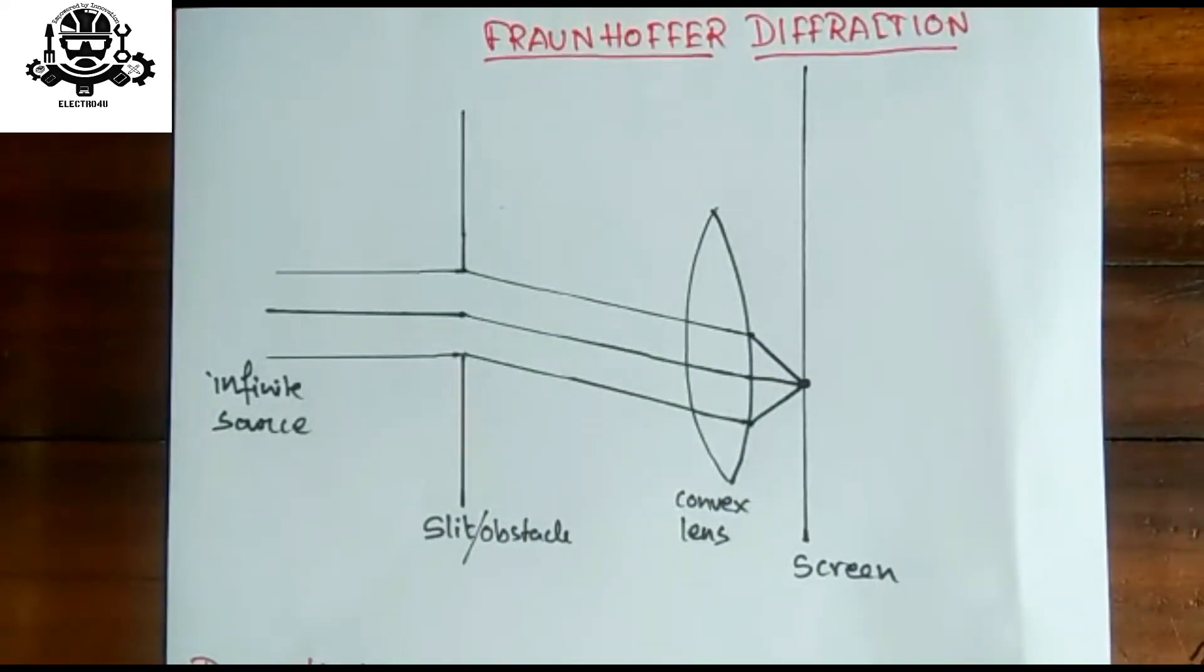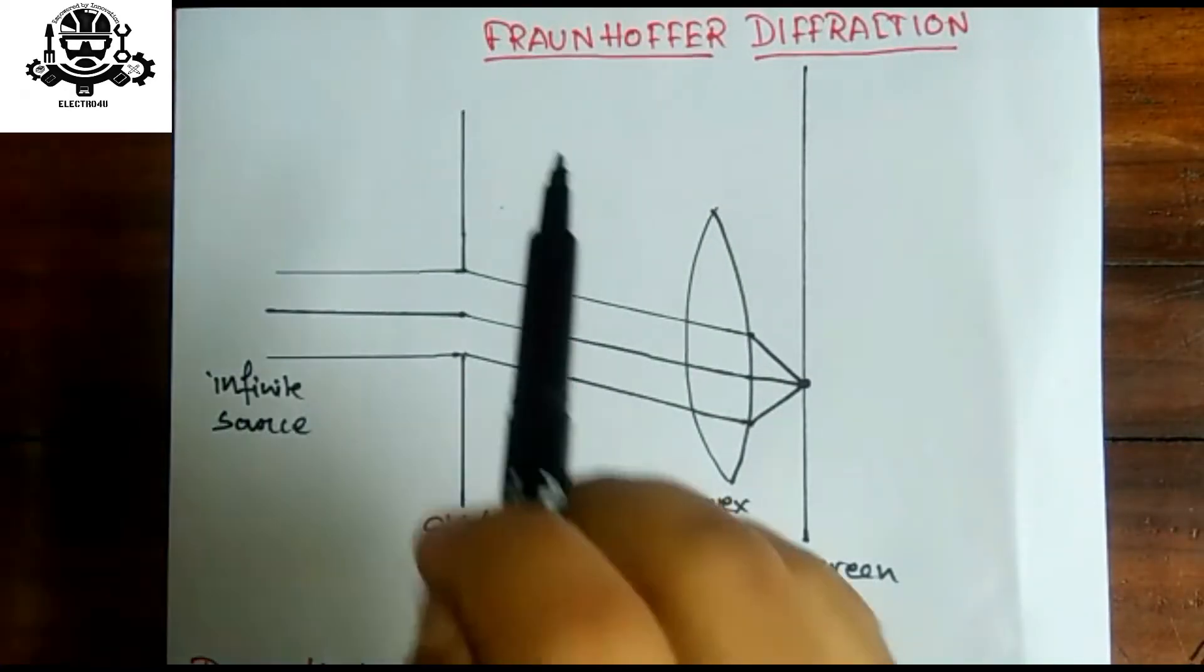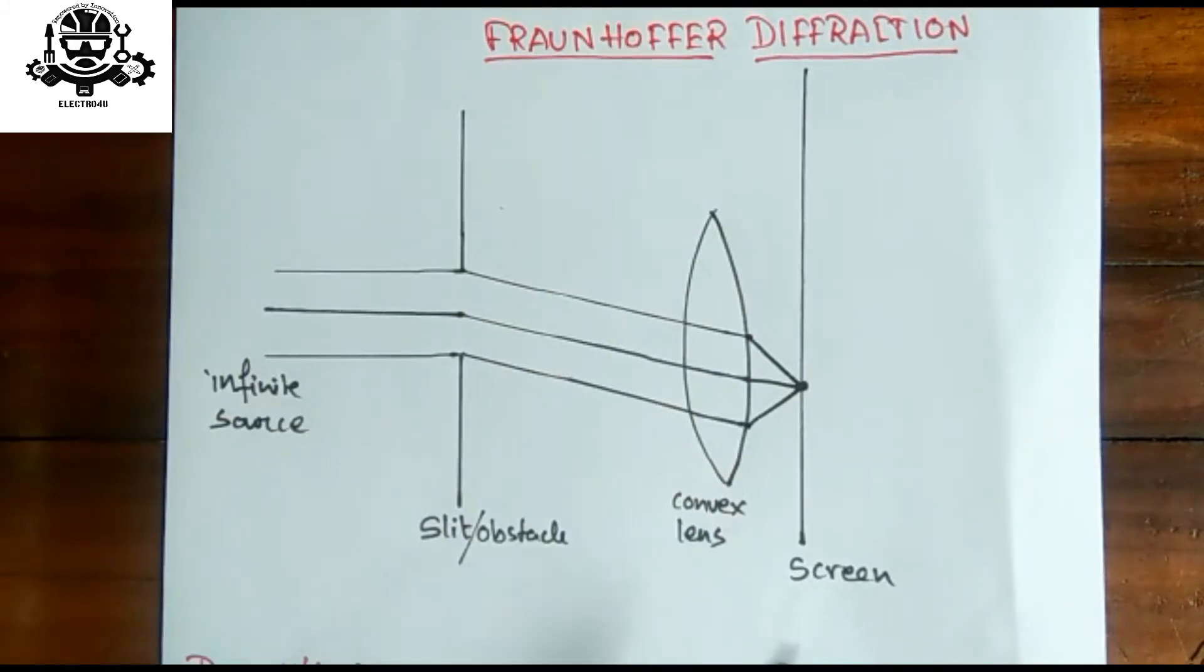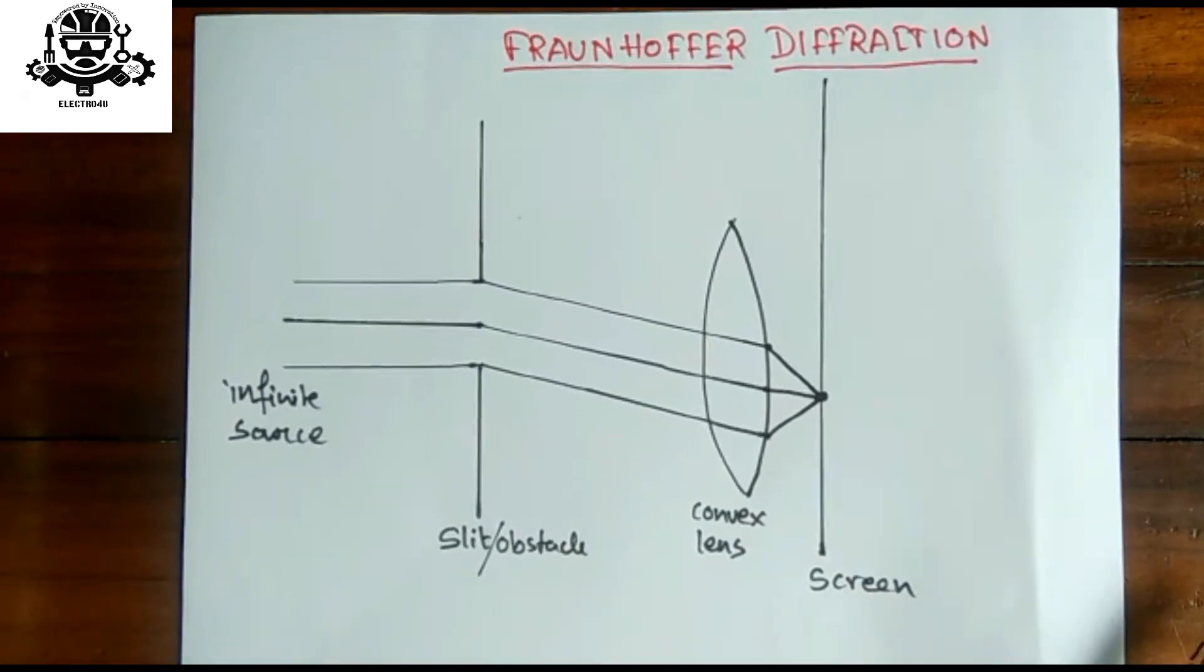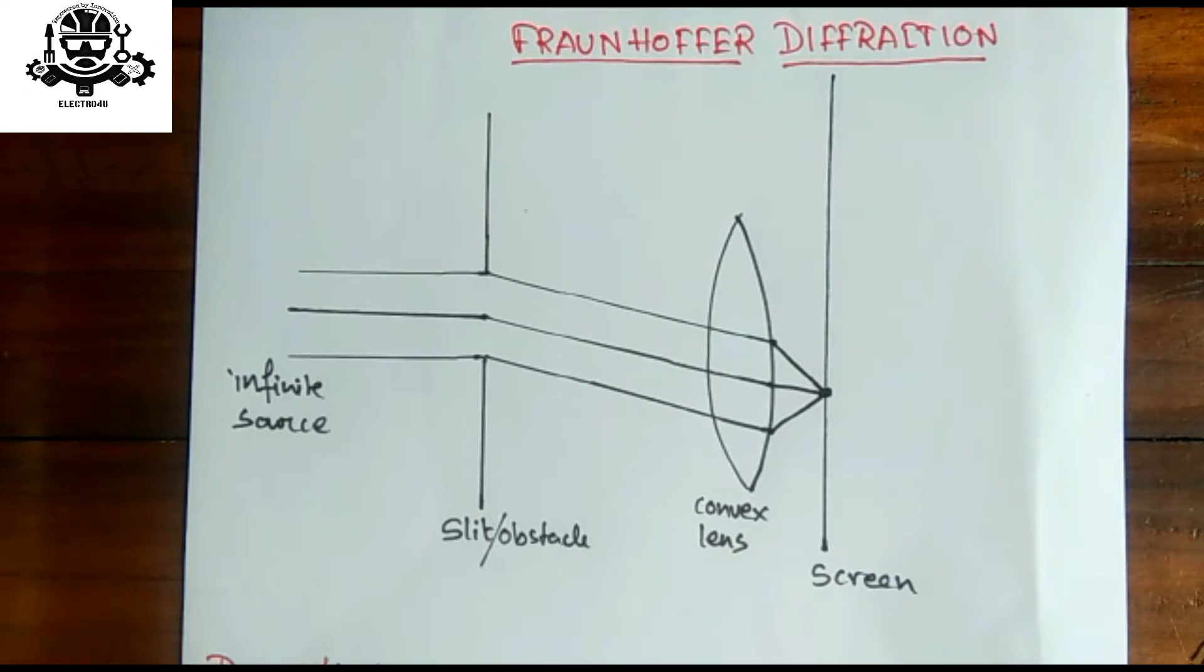Welcome back everyone. Today we are going to start with Fraunhofer diffraction. Basically, we know that the bending of light through any obstacle is called diffraction. Among that, what is Fraunhofer diffraction? Let's see that.